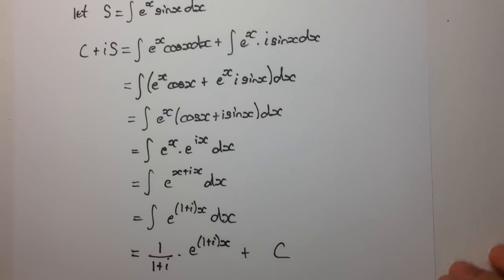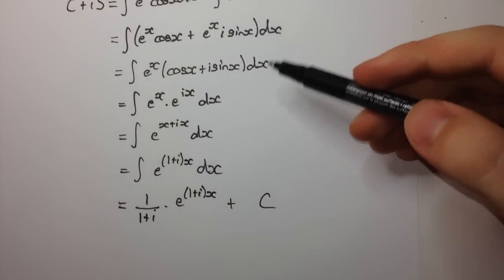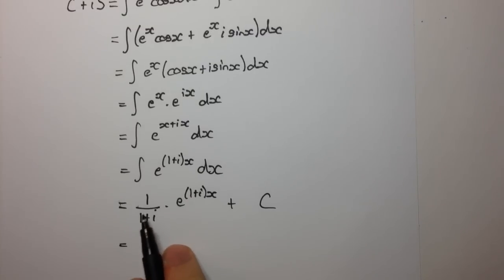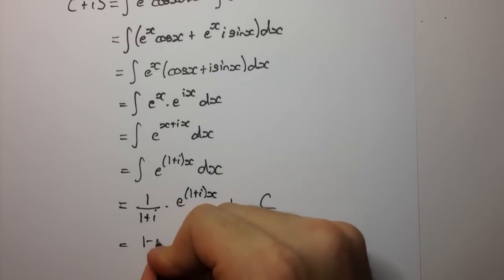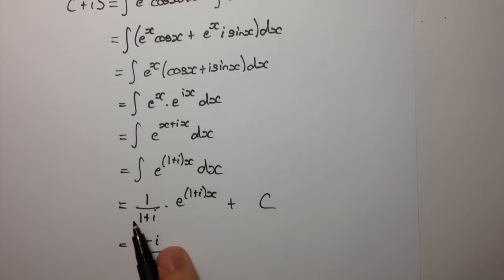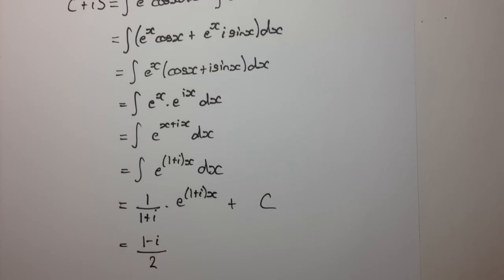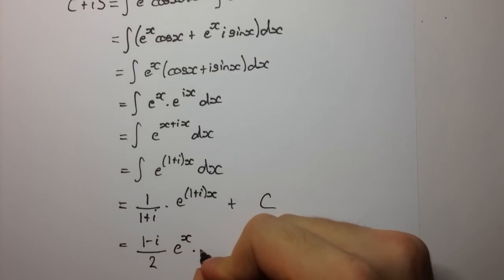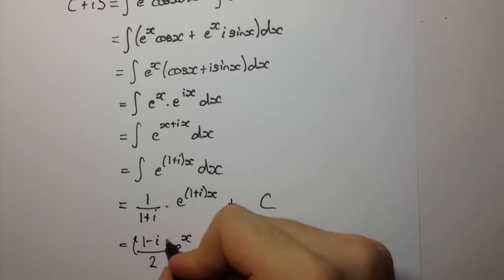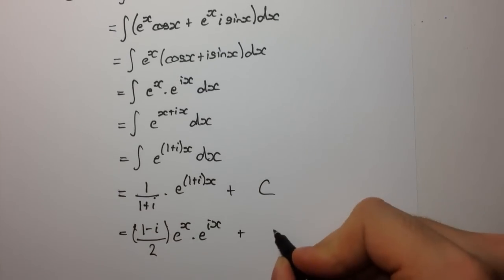We can integrate this: it's simply 1 divided by the coefficient of x, times e to the (1 plus i)x, plus some constant c. Now let's rationalize this fraction by multiplying top and bottom by the conjugate, which is 1 minus i. On the bottom we get the modulus squared, which is the real part squared plus the imaginary part squared, giving 2. And e to the (1+i)x separates as e to the x times e to the i·x, plus our constant.